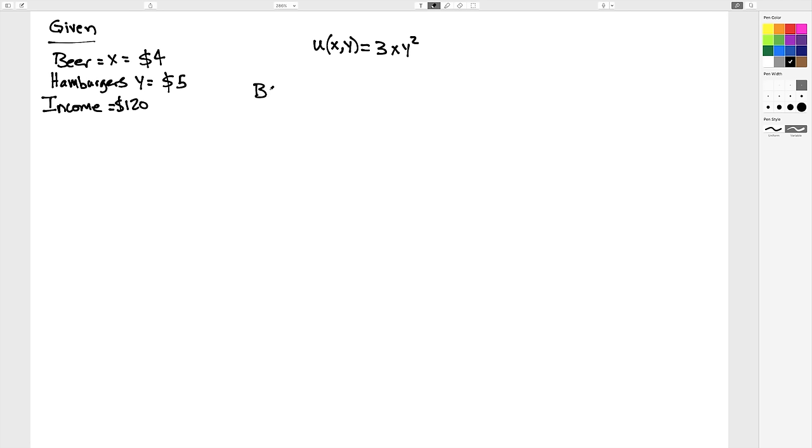The budget line is equal to, and I'm going to leave it in this form, I equals price of X times X plus price of Y times Y. Let's plug in our information to this. 120 equals 4X plus 5Y.